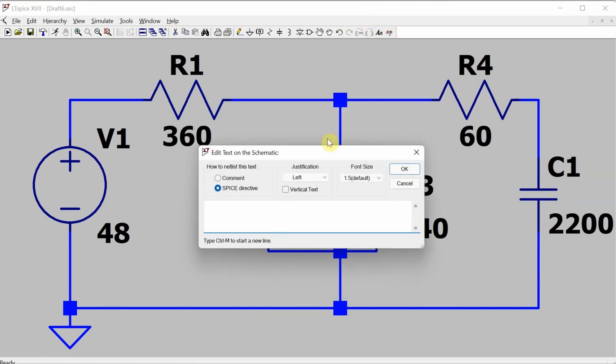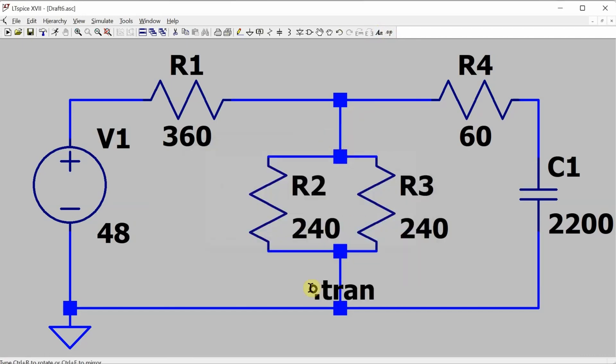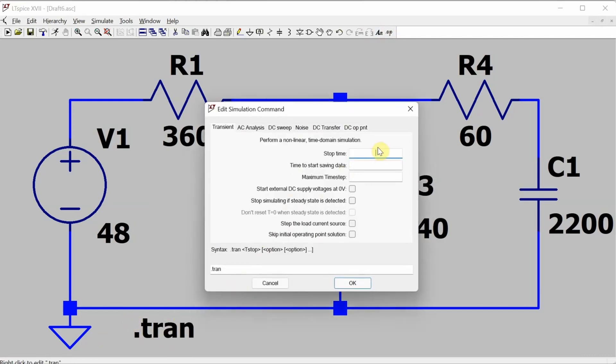And then I'll drop down the simulation statement. I'm going to run it for three seconds, start saving data at zero seconds, and I'm going to do a time step of 0.01 seconds.